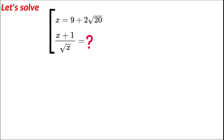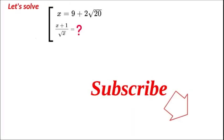Hello and welcome back to Maths Plus. Today we have a radical equation: x plus 9 plus the square root of 20, and we're finding x plus 1 over the square root of x. Maybe pause the video and try the problem yourself, but if you're new to the channel, don't forget to subscribe.